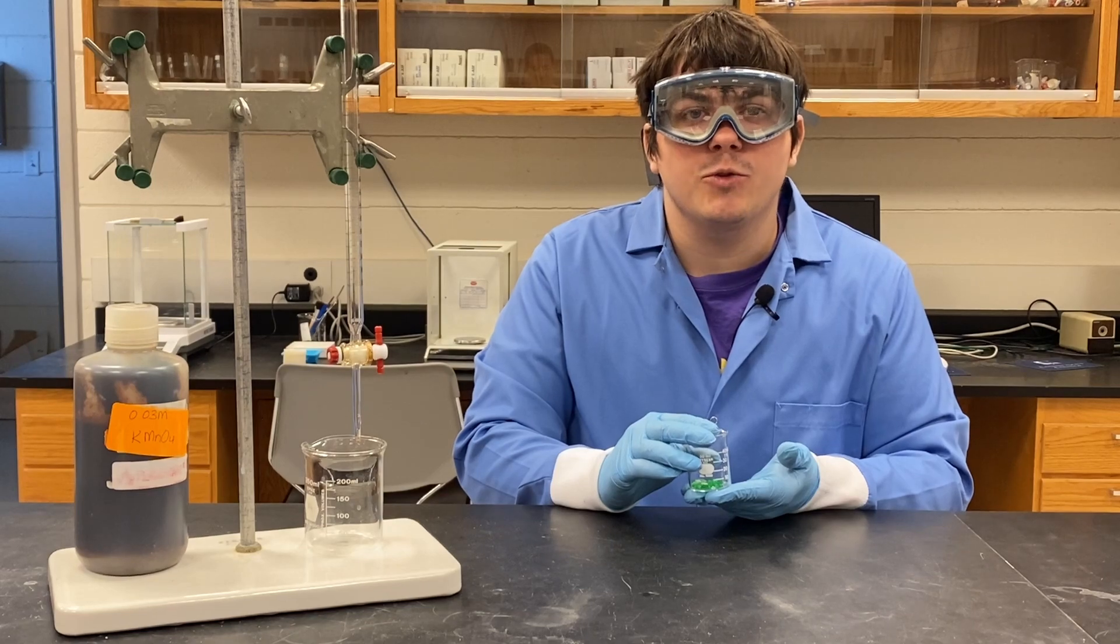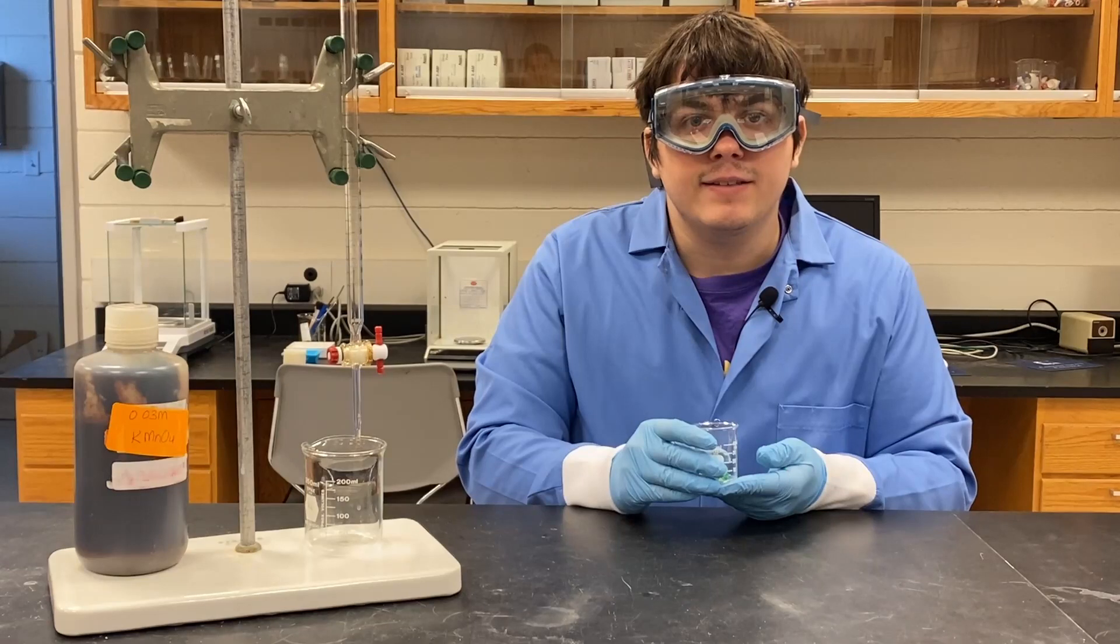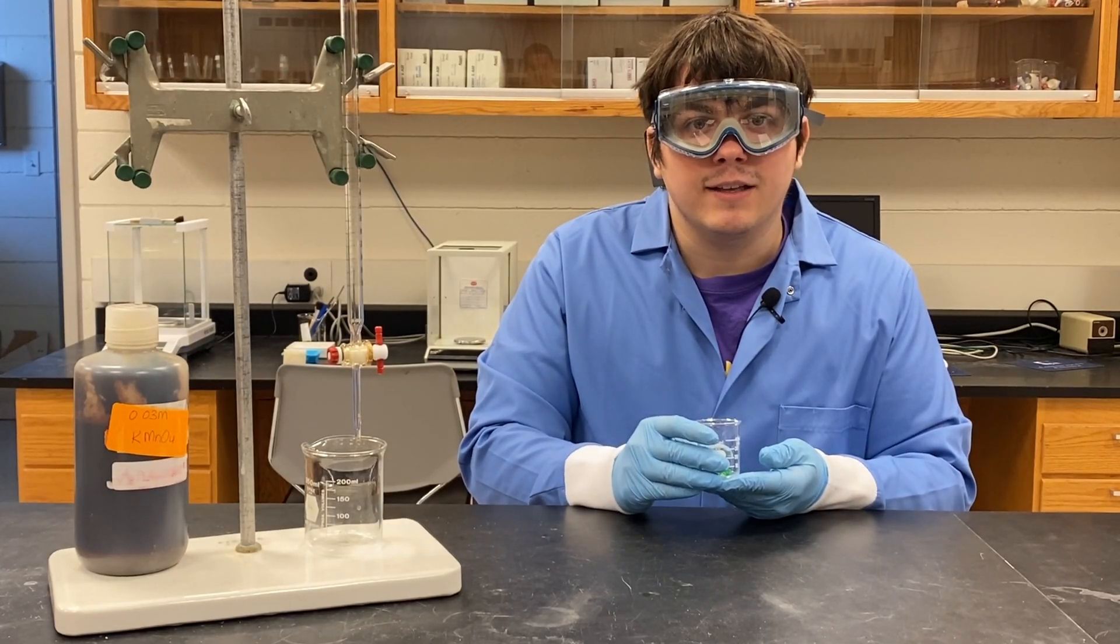Now the same type of titration is repeated, but you will be using your green crystals instead of sodium oxalate. This titration of the green crystals will allow you to determine the percent oxalate in that sample.